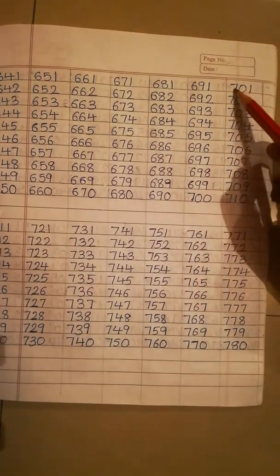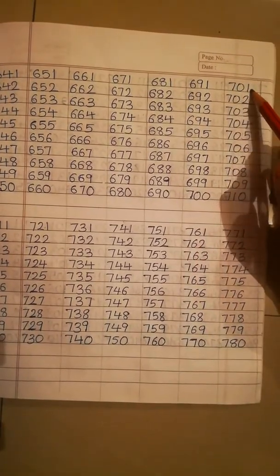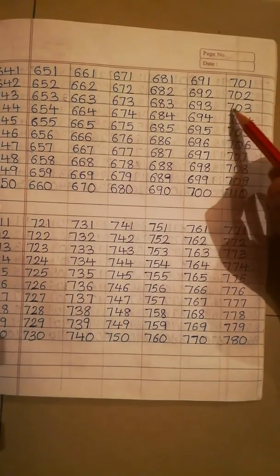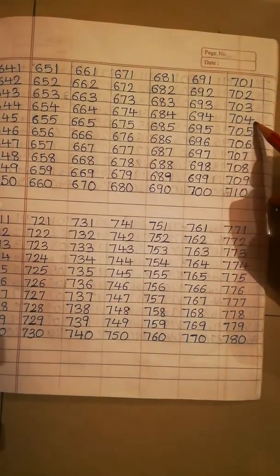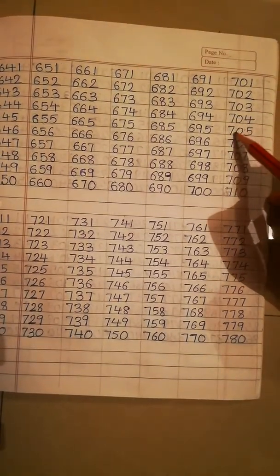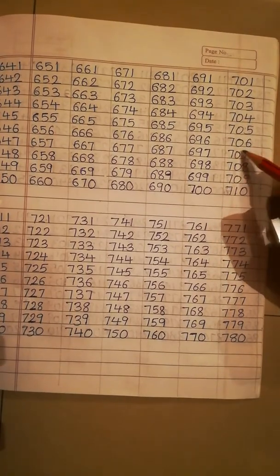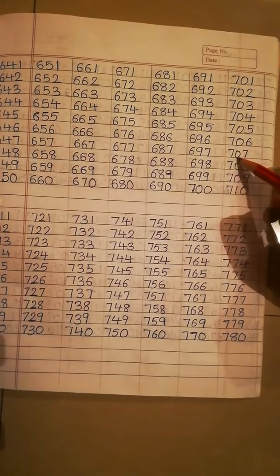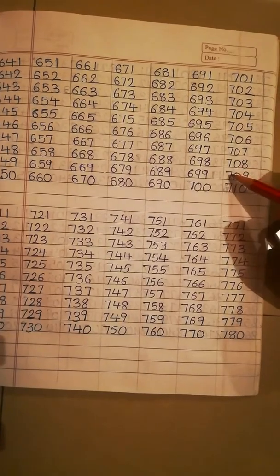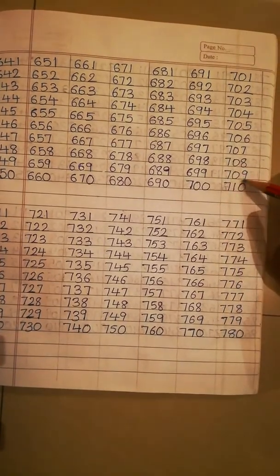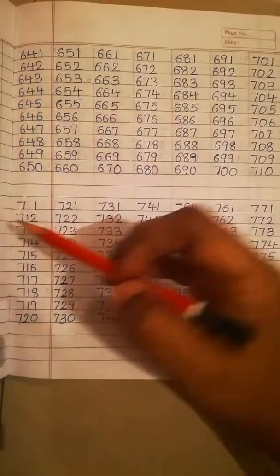Now next line we start: 701, 702, 703, 704, 705, 706, 707, 708, 709, 710. Okay.